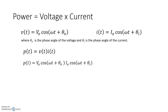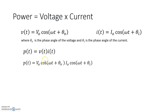If we expand that, v(t) and i(t) are v0·cos(ωt + θ_v) times i0·cos(ωt + θ_i). If you look at this, it looks like cosine a times cosine b. Using the trig identity, cosine a · cosine b equals [cosine(a+b) + cosine(a−b)] divided by 2.